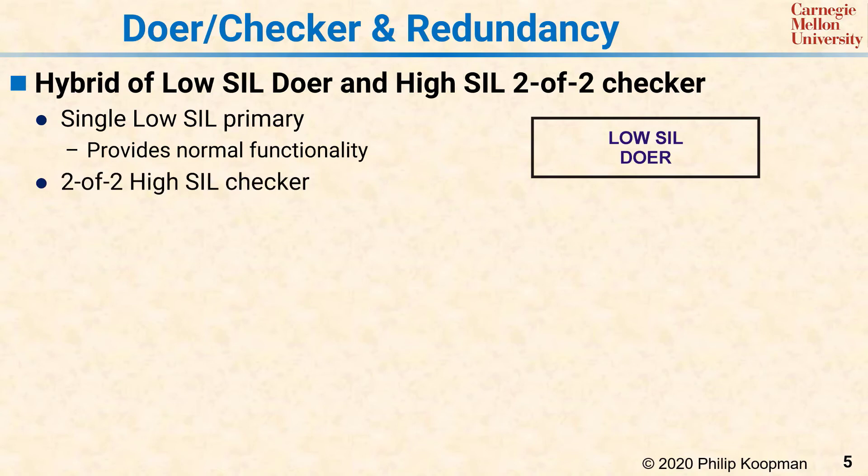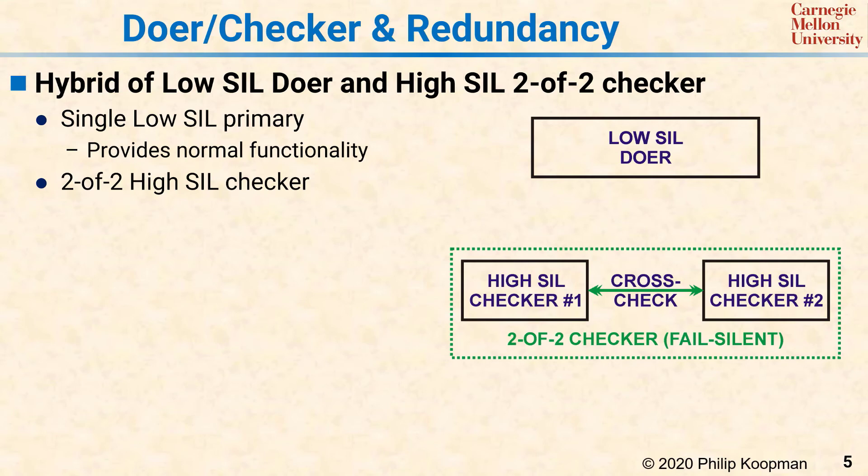We're using a high-SIL checker because the system itself is high-SIL, meaning it is life-critical or the equivalent. A problem with the simple version of this pattern is that the checker itself could fail—if the checker were only a single CPU, it might have an internal fault missed by its self-diagnosis and end up not checking properly. That's why, for this pattern, we're using a 2-of-2 pair for the checker.